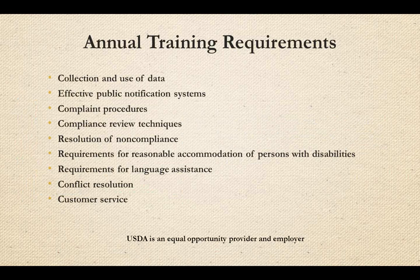Training is required so that people involved in all levels of administration of programs that receive federal financial assistance understand civil rights related laws, regulations, procedures, and directives. Persons responsible for reviewing civil rights compliance must receive training to assist them in performing their review responsibilities. This training may be carried out as part of ongoing technical assistance. State agencies are responsible for training child nutrition program sponsors. Sponsors are responsible for training their staff, which includes frontline staff.